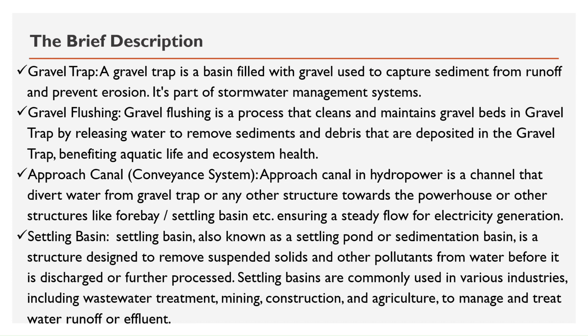Approach canal: in hydropower, a channel that diverts water from the gravel trap or other structures towards the powerhouse or structures like the forebay or settling basin, ensuring a steady flow for electricity generation. Settling basin: also known as a settling pond or sedimentation basin, it is a structure designed to remove suspended solids and other pollutants from water before it is discharged or further processed.